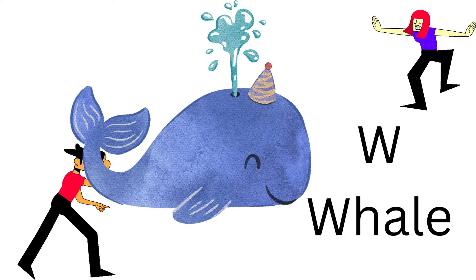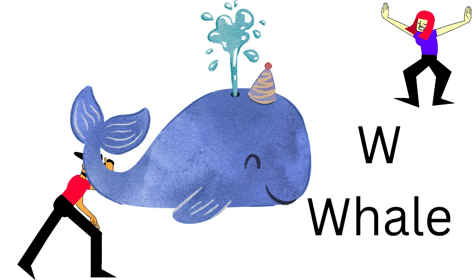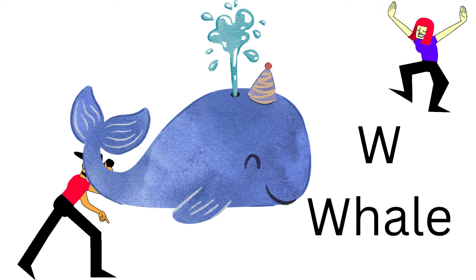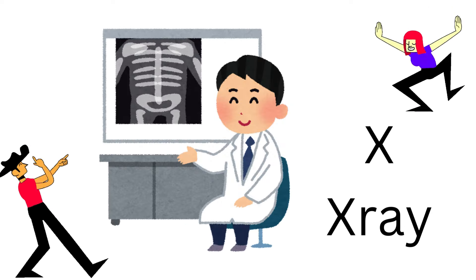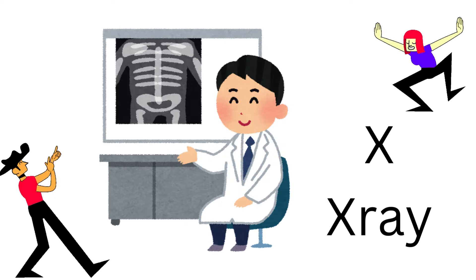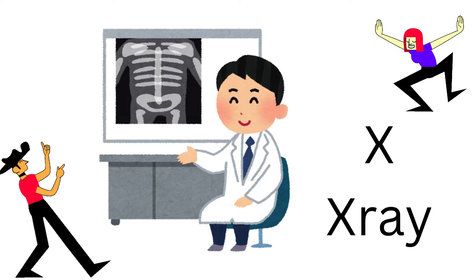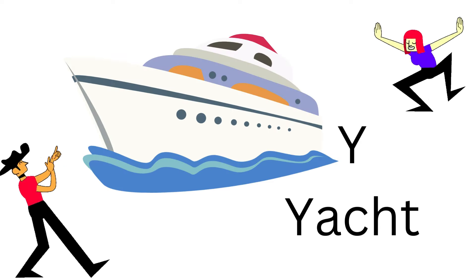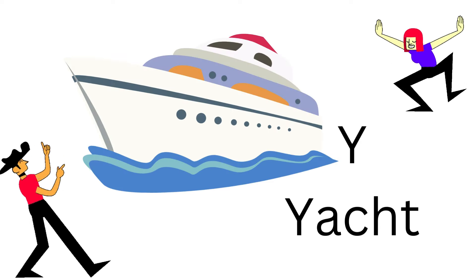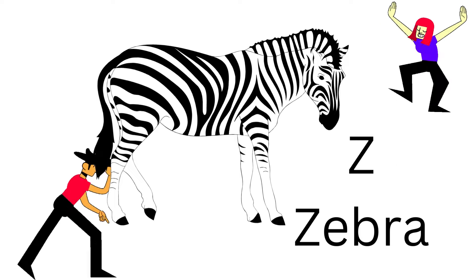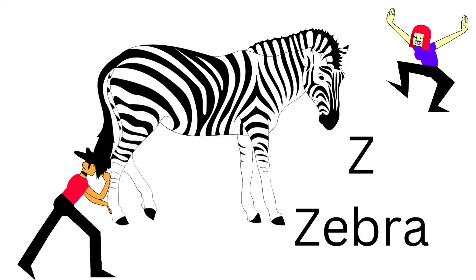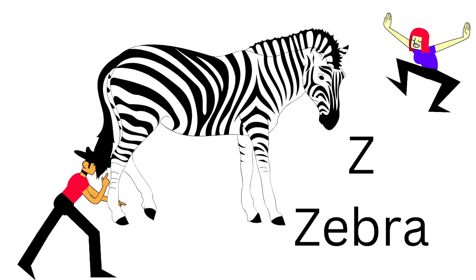W's for the whale swimming deep. X's for the x-ray that lets us peek. Y's for the yacht sailing on the sea. Z's for the zebra with stripes that flick.